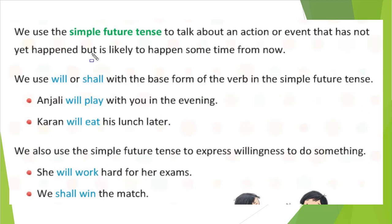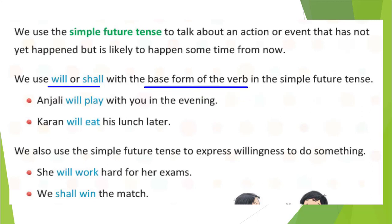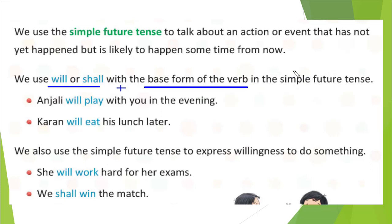Let us see here what is written. We use will or shall with the base form of the verb. This is very important — you need to understand how we can form the simple future tense. That is: will or shall plus the base form of the verb. We will write the subject, then will or shall, and after that the base form of the verb to represent the simple future tense.